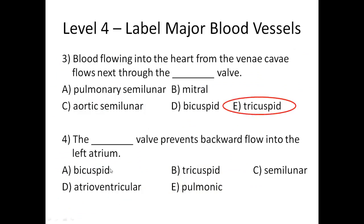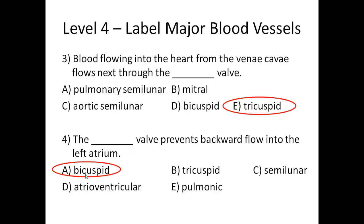Looking at the choices, we have bicuspid, tricuspid, and semilunar. We said the right side is the tricuspid, so the left is going to be the bicuspid or the mitral. The mitral is not listed, so it's going to be the bicuspid valve. And that's it for level 4 — that should definitely help you with test questions about blood flow: which way the blood goes next and which valves are involved.